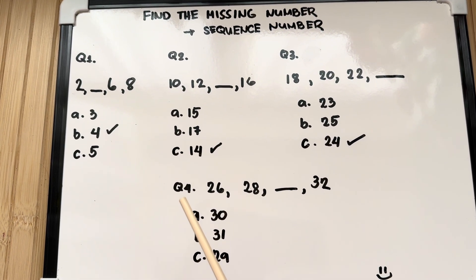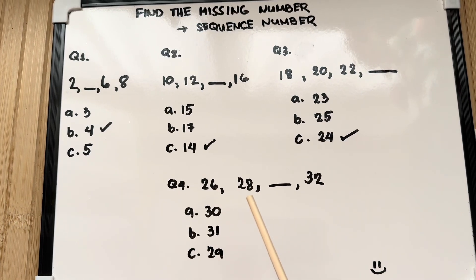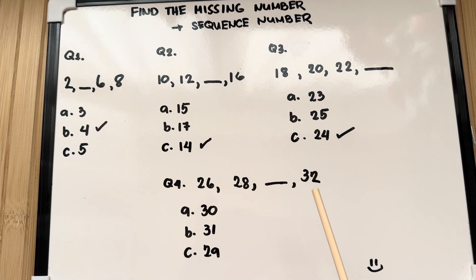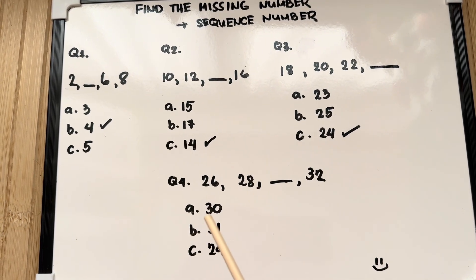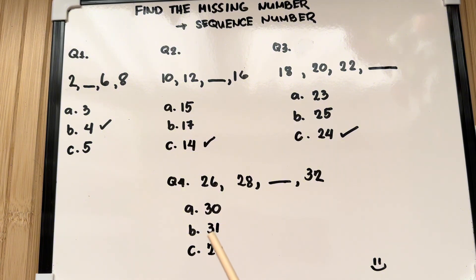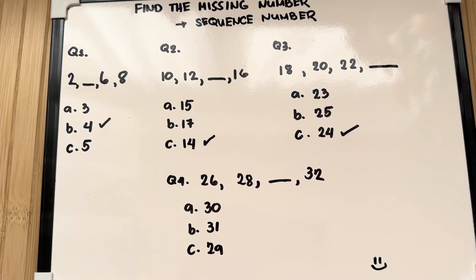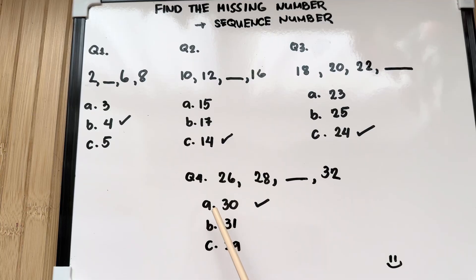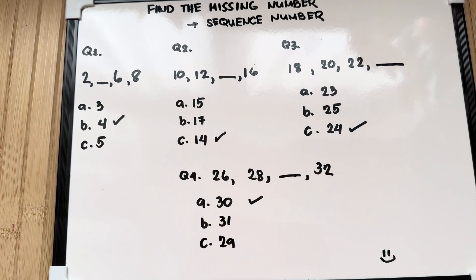Lastly, question number 4: 26, 28, blank, 32. Is it letter A: 30? B: 31? Or is it letter C: 29? And the correct answer is letter A: 30.